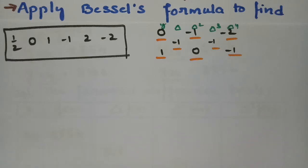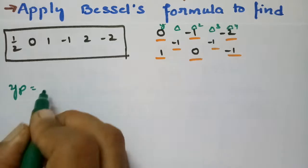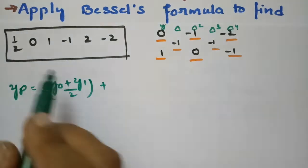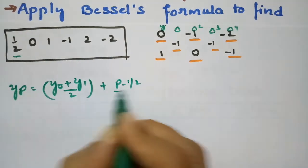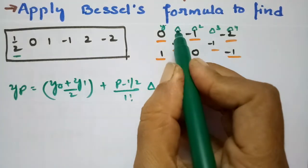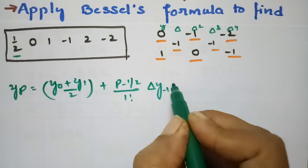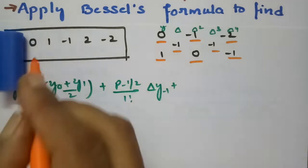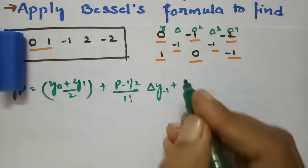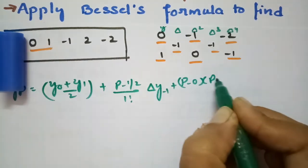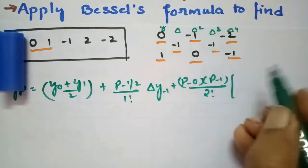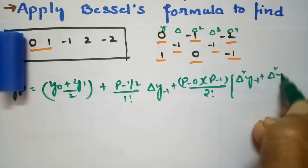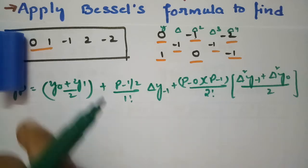Bessel's formula is: yp = (y₀ + y₁)/2 + (p − 1/2)/1! × Δy₋₁ + [p(p−1)/2!] × (Δ²y₋₁ + Δ²y₀)/2. The first term averages the two central y values; the second term uses the single first difference Δy₋₁; and the third term averages the two second differences divided by 2.